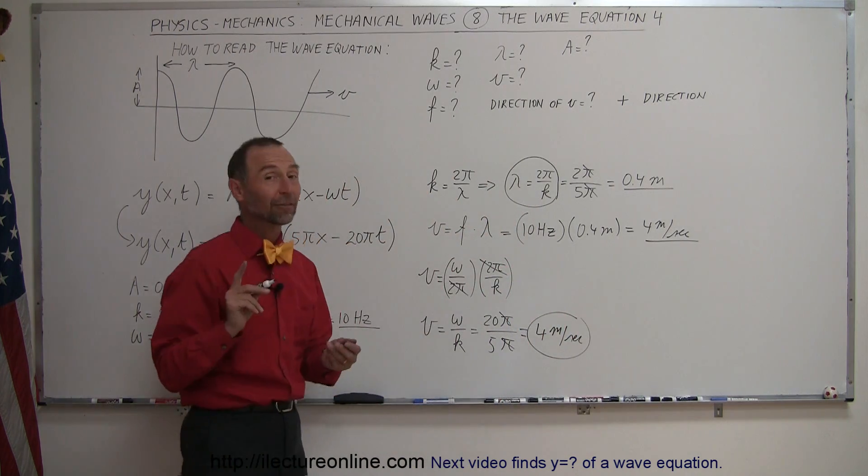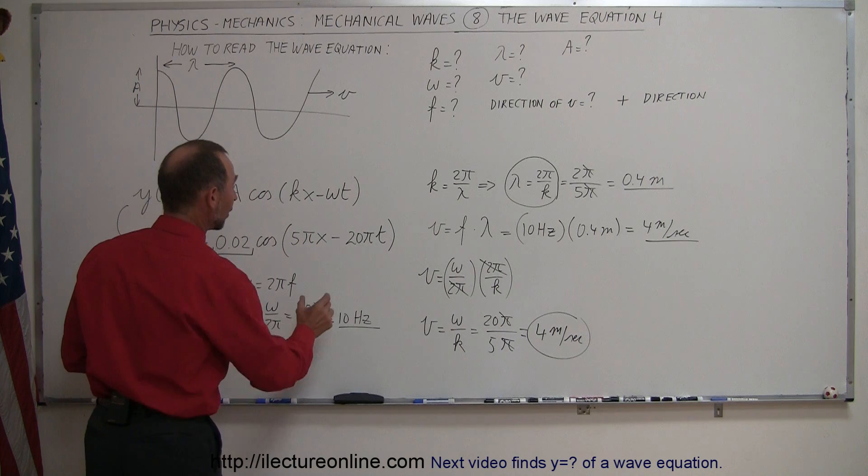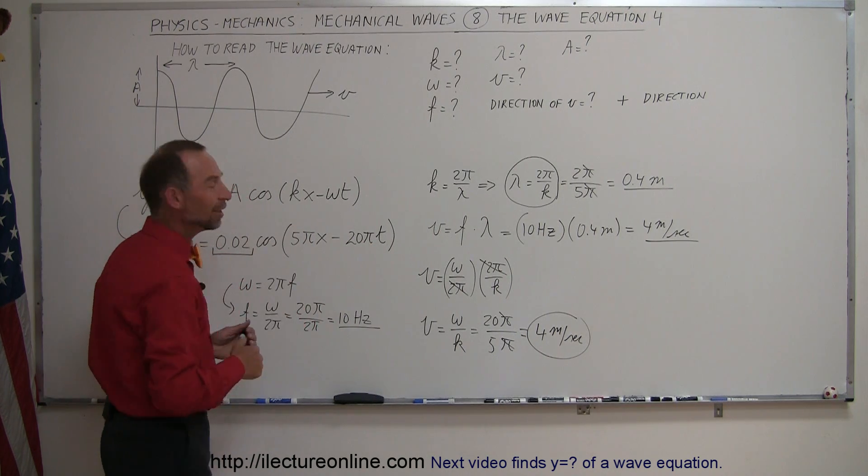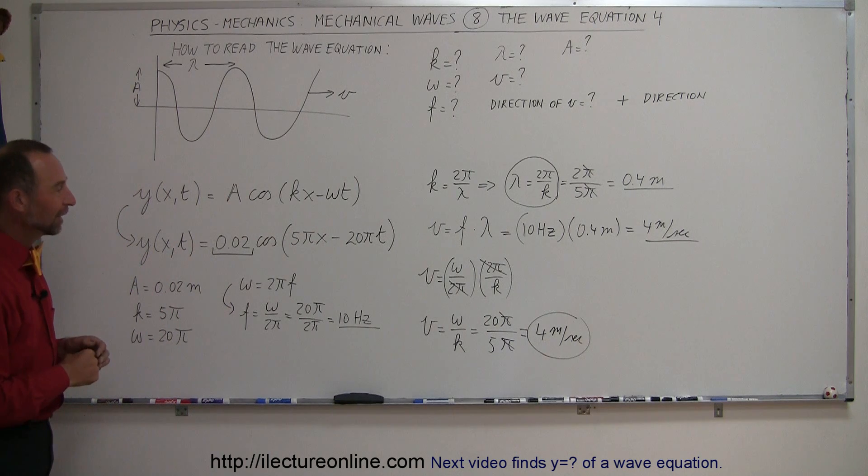So notice that you can also find the velocity of the wave by simply taking omega and dividing it by k, which also gives you the velocity of the wave. That comes in handy sometimes.